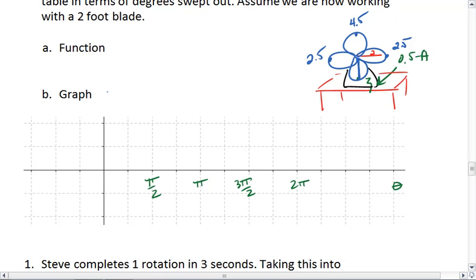At 0 radians at the 3 o'clock position, he's at 2.5 feet. He moves up to 4.5 by pi over 2, then back down to 2.5, down to 0.5, back to 2.5, up to 4.5, and back to 2.5.